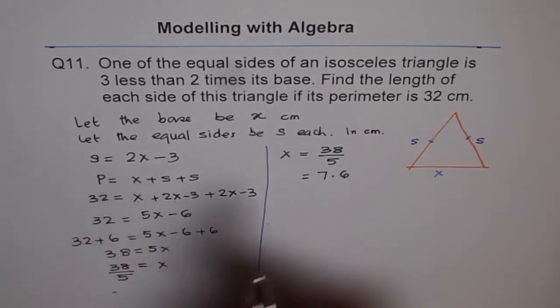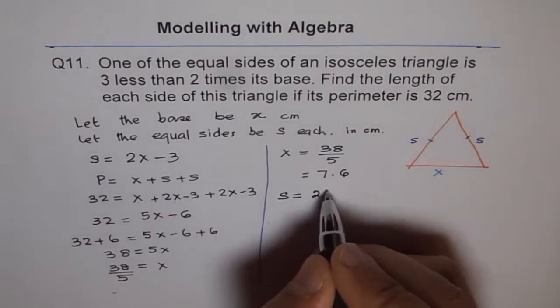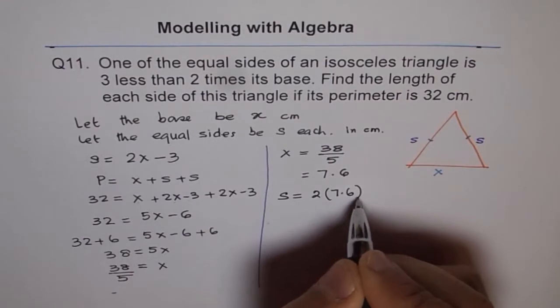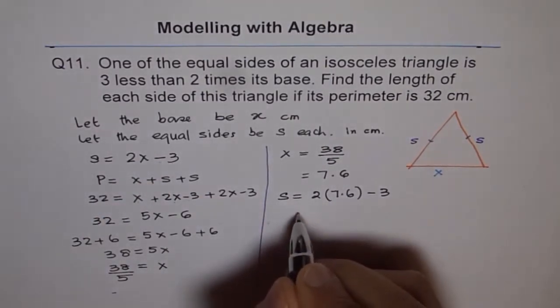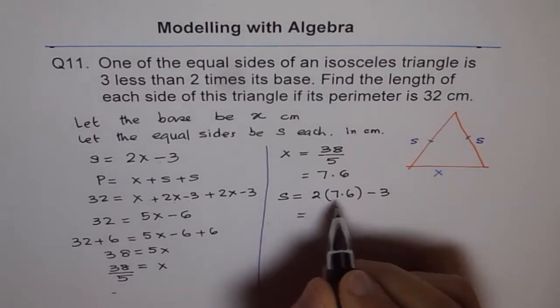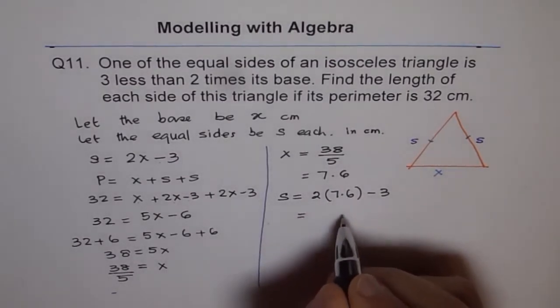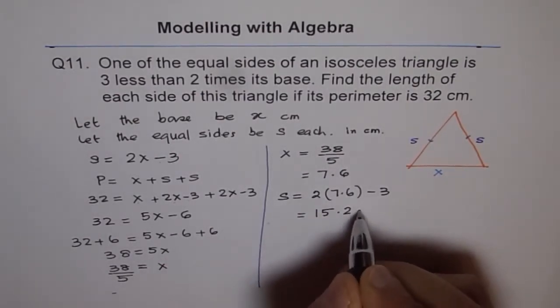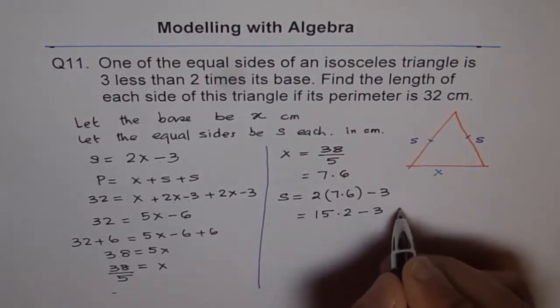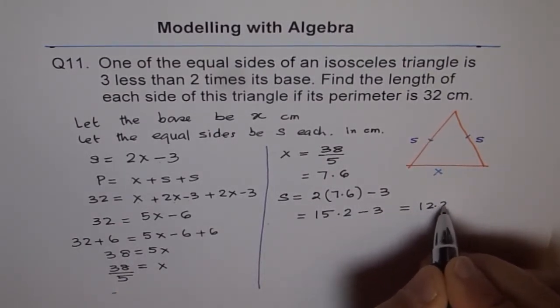What are the side lengths? Side lengths are 2 times x, which is 2 times 7.6 minus 3. 2 times 6 is 12, 2 and 1, 15.2 minus 3. That gives us 12.2.